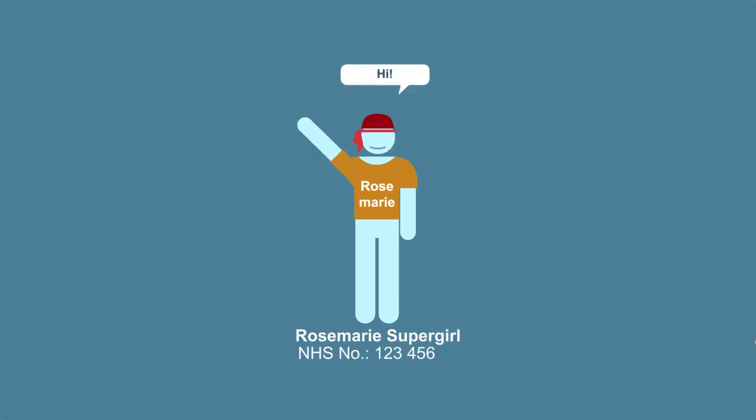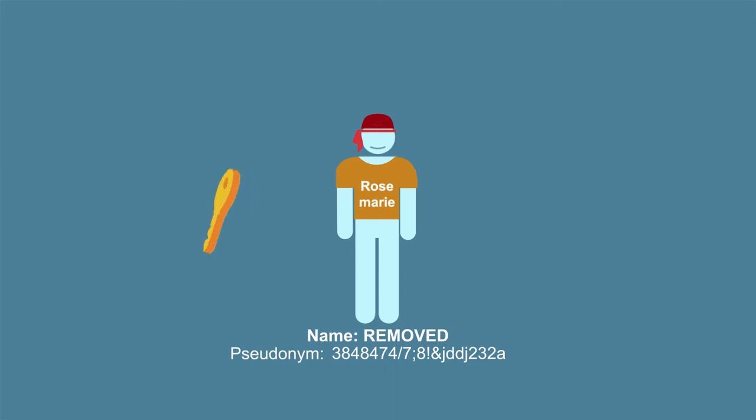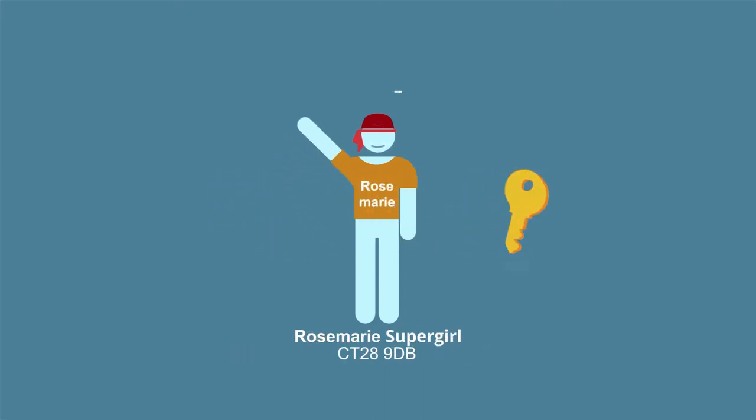For the patient Rosemary Supergirl, you might remove her name and pseudonymize her NHS number. Only the NHS trust looking after her data can use the key to unlock the pseudonym and reveal her identity.